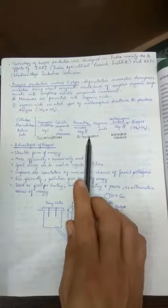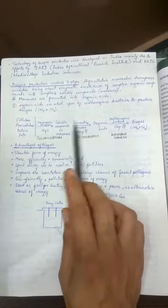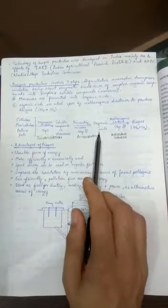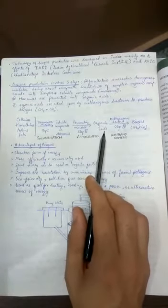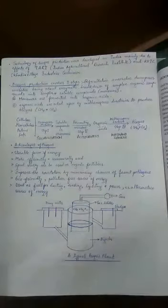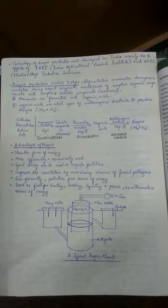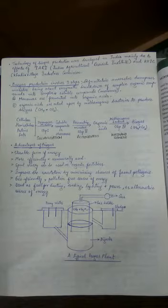They ferment and finally convert these monomers into organic acids, basically acetic acid. The most commonly produced acid in this process is acetic acid. This step where acid is formed is called acidogenesis.